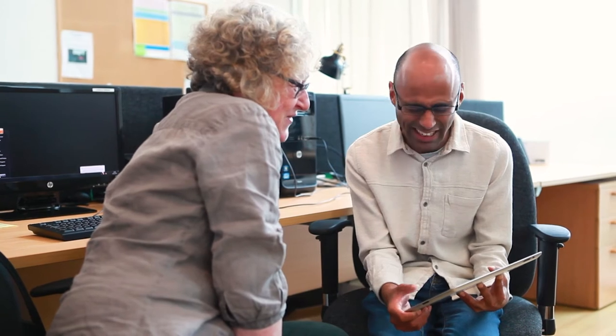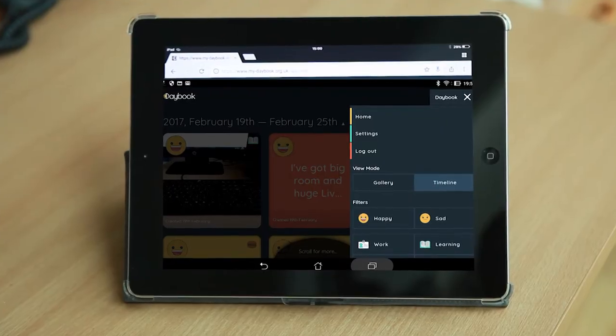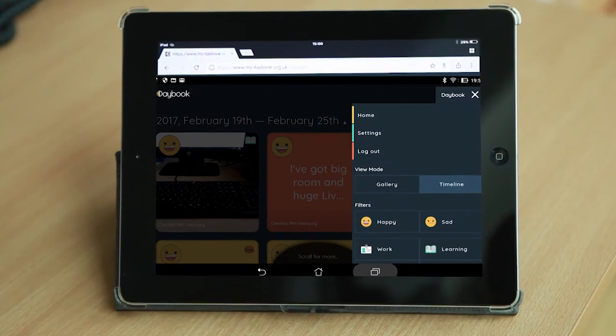You can look back through your diary to show people what you have done in the past. You can search Daybook by topic or feeling to find things that have happened in the past.